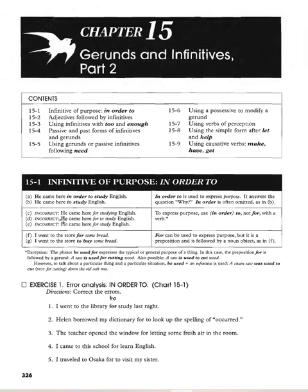Incorrect forms: 'He came here for studying English,' 'He came here for to study English,' 'He came here for study English' — all incorrect. To express purpose, use 'in order to,' not 'for,' with a verb.